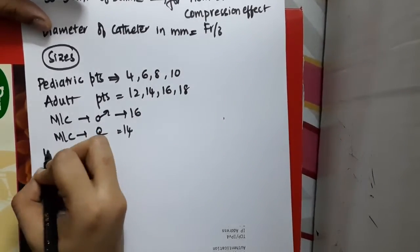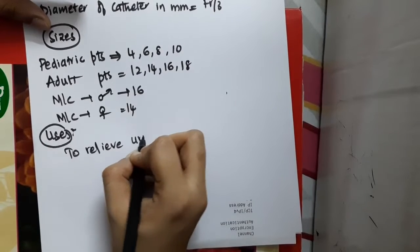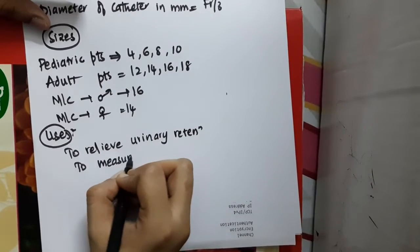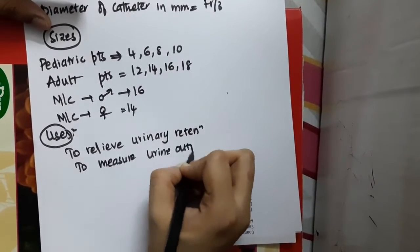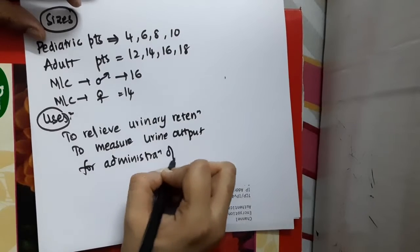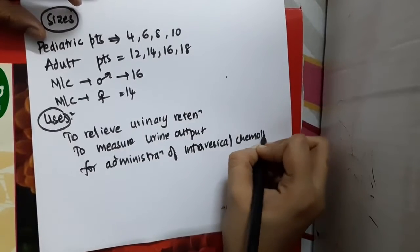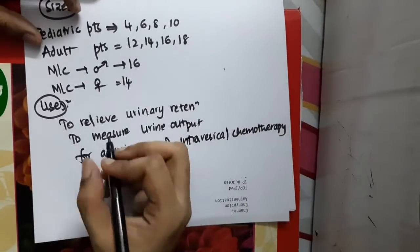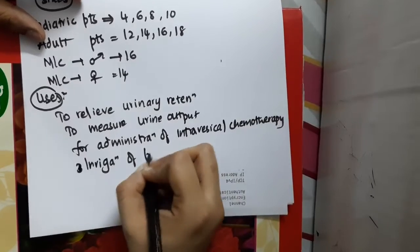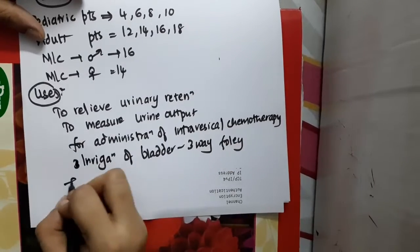The uses of Foley's catheter are: to relieve urinary retention, to measure urine output, for administration of intravesical chemotherapy, and for irrigation of the bladder — especially using the three-way Foley's catheter.